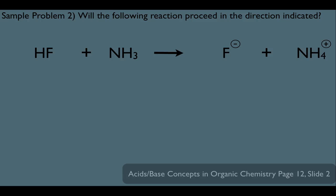Will the following reaction proceed in the direction as indicated? Let's get to know our reaction. This HF is turning into F-, which means he's donating a proton. That's going to make him the acid, and this his conjugate base. That makes NH3 the base, and NH4+ his conjugate acid on the right.